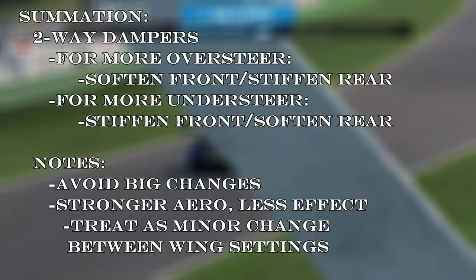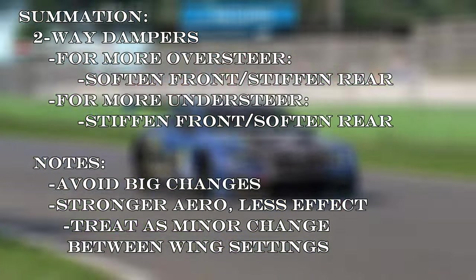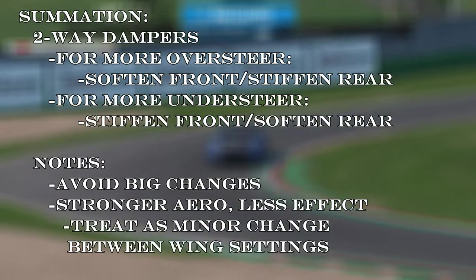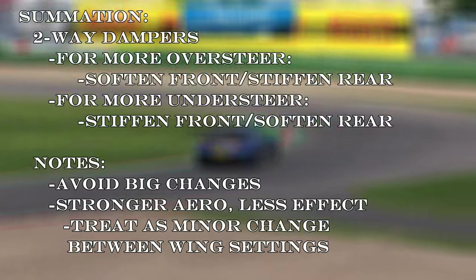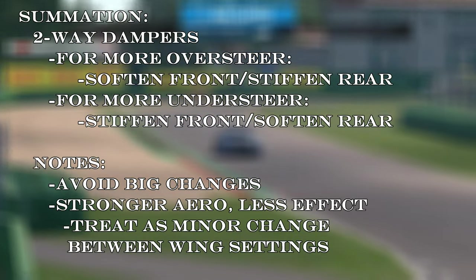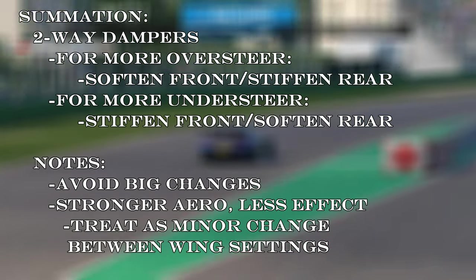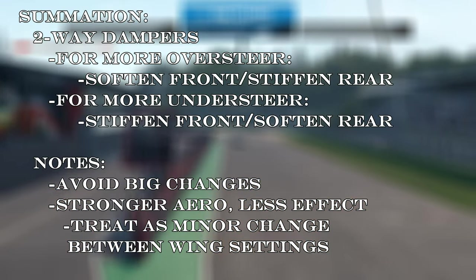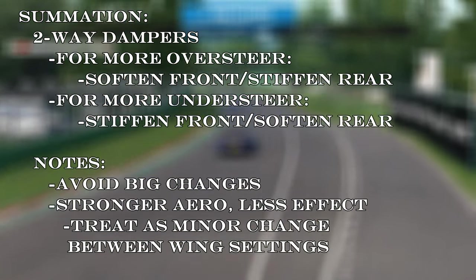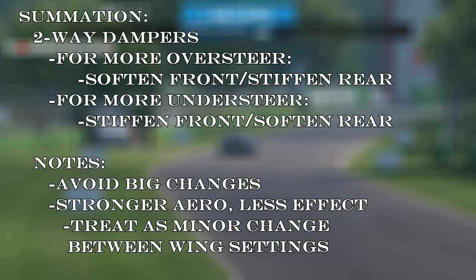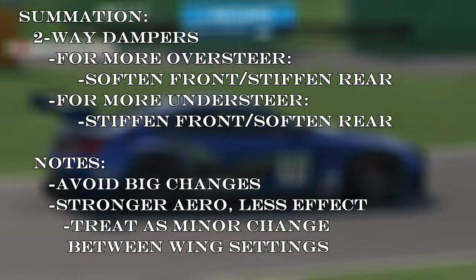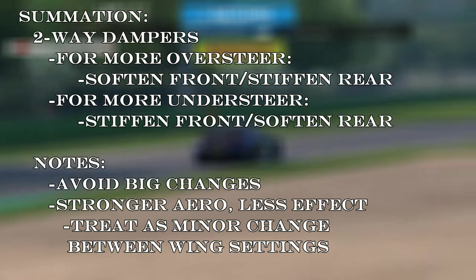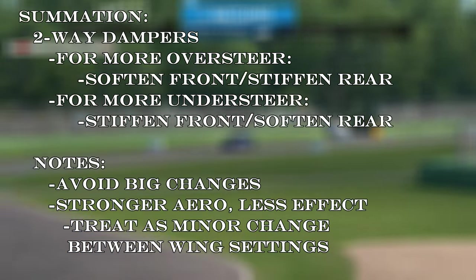In summation for two-way damping systems: making minor changes to dampers can influence traction, especially on bumpy tracks. If you want a touch more oversteer, try softening the front dampers and stiffening the rears in equal measure. If you want a touch more understeer, do the opposite — stiffen the front dampers and soften the rears. You might want to induce understeer because the front tires are running a lot cooler than the rears. Use these changes sparingly with two-way dampers, as they still influence the car in transient conditions. The stronger the aero the car has, the less impact this will have, but treat it as a minute change in between wing settings.